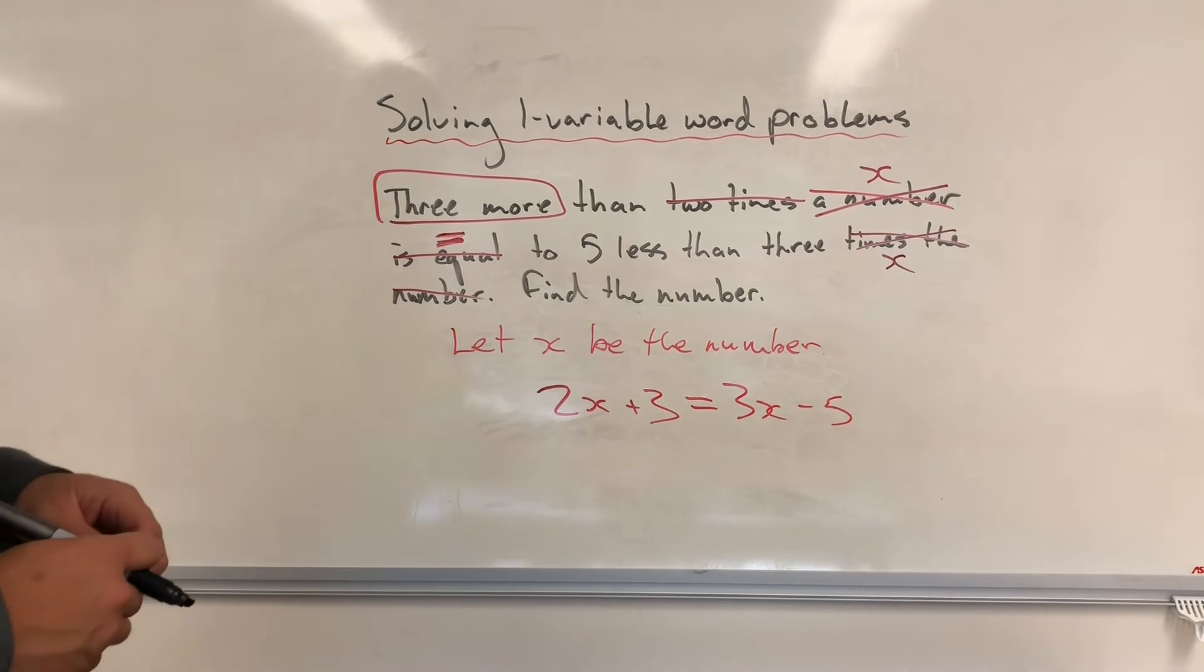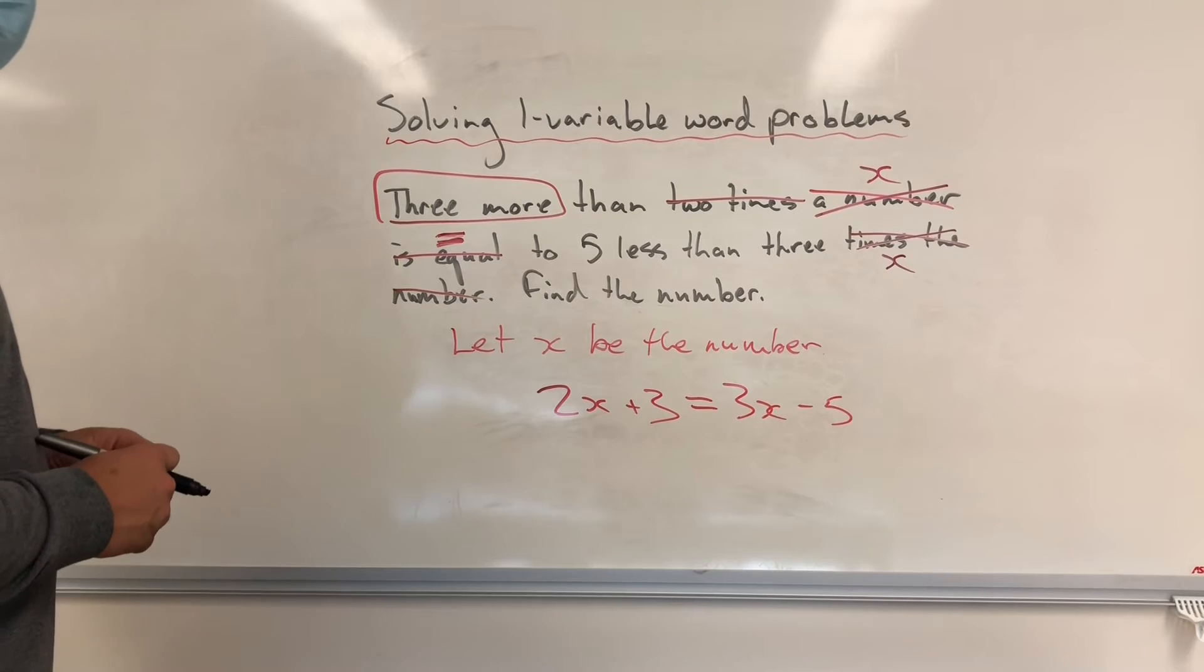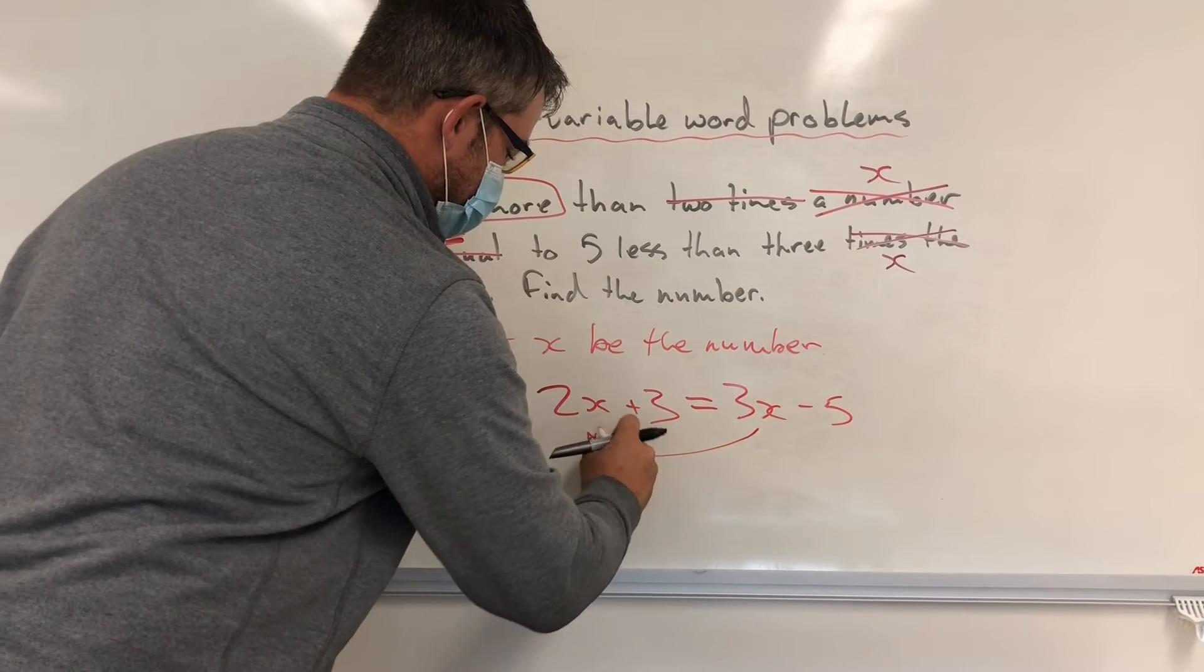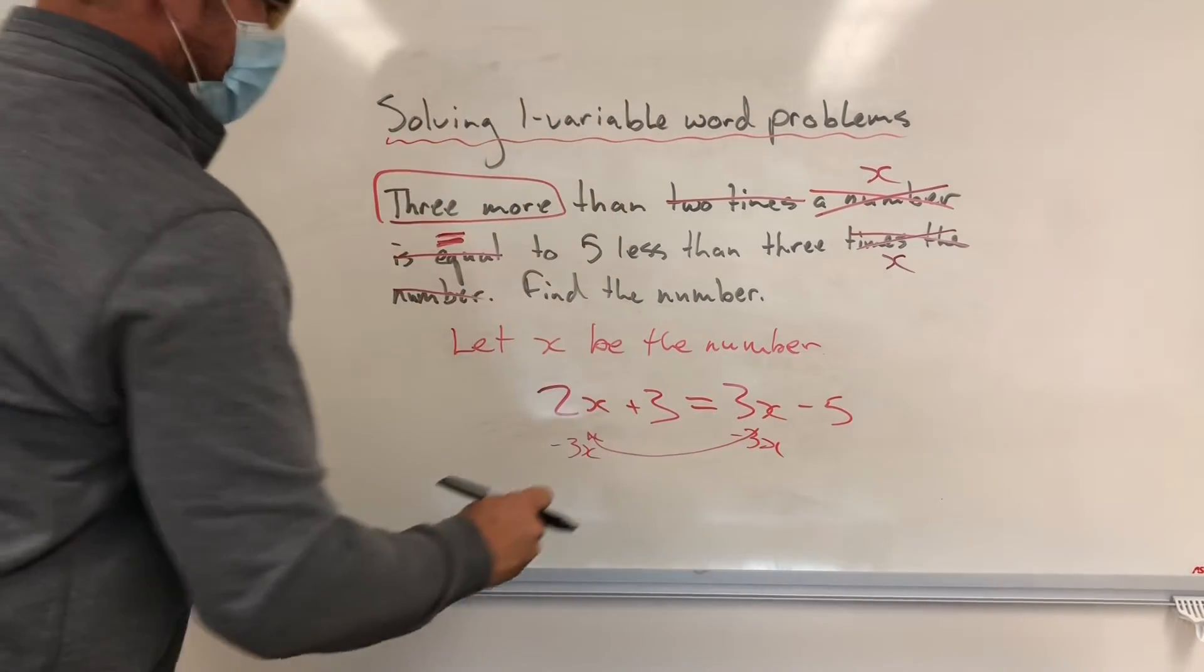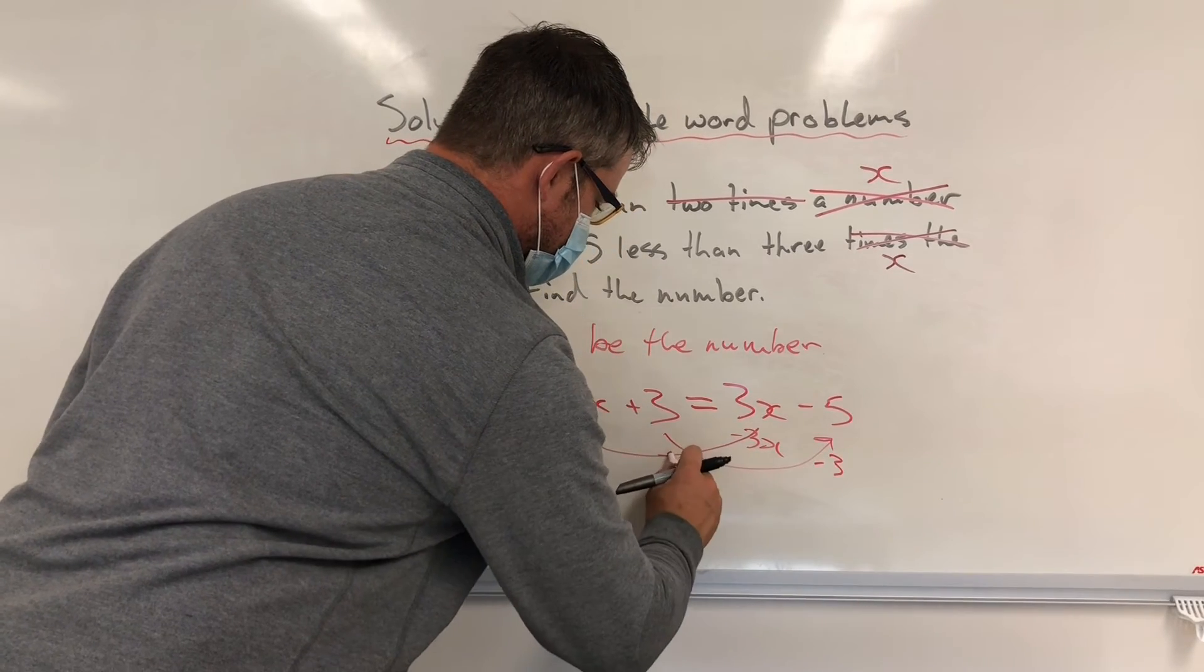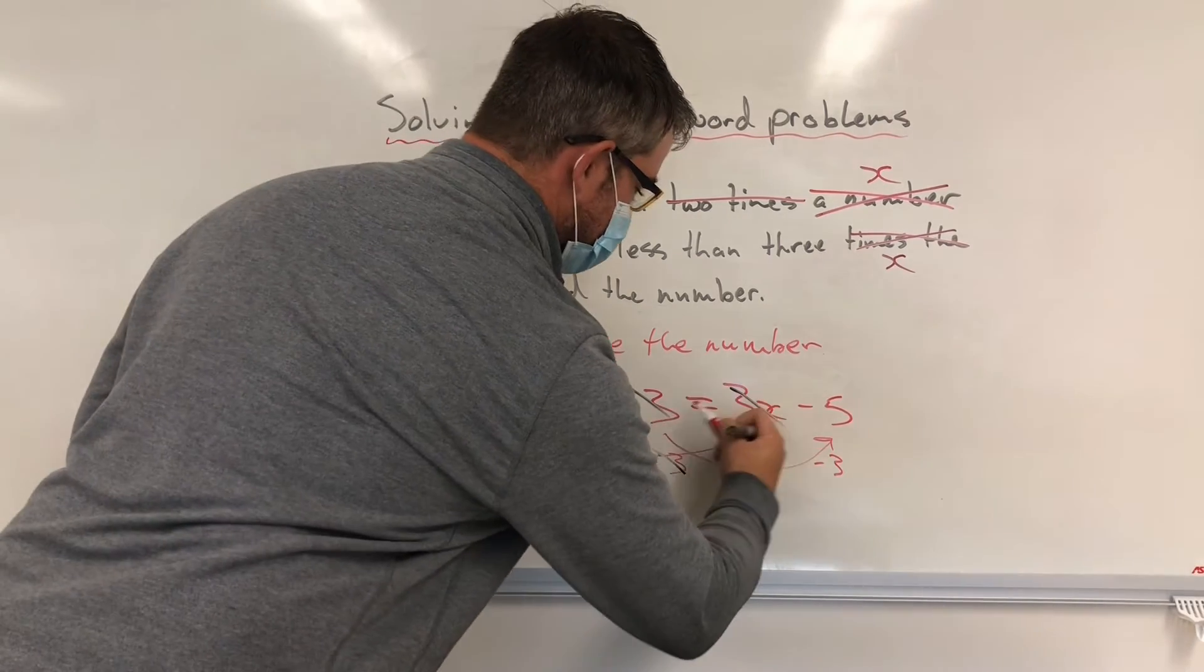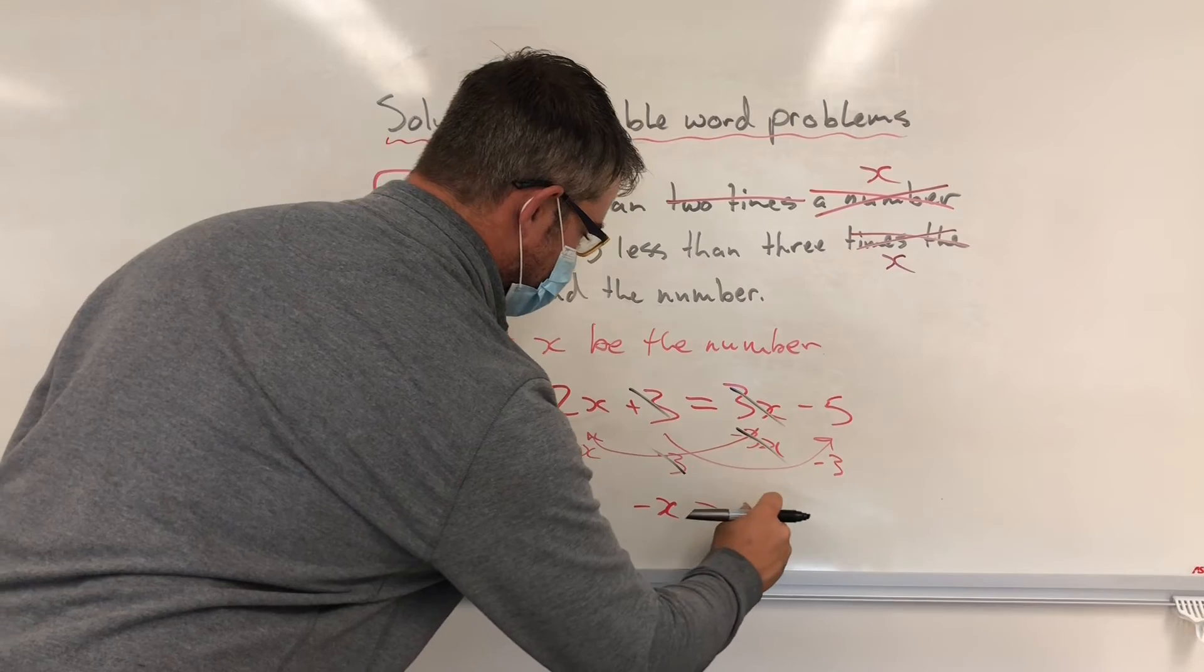And I can do so using my solving multi-step equations work. So I would just simply move this 3X over by subtracting it from both sides. And then I'd move this 3 over by subtracting it from both sides. They would cancel. They would cancel.